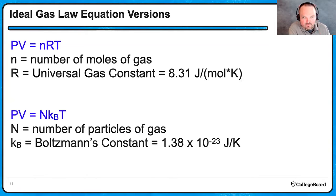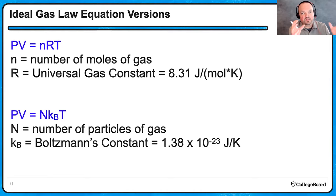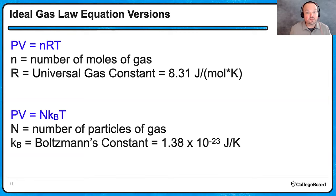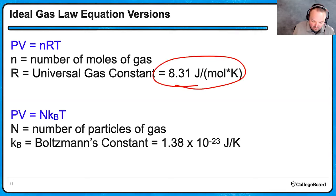The law I didn't graph is Avogadro's law, concerning the effect of changing the number of particles — we're almost always going to talk about a closed container where gas can't escape. There are two versions of the ideal gas law: PV = nRT using number of moles (little n), and PV = Nk_B T using number of particles (big N). To go from R to Boltzmann's constant, you just divide by Avogadro's number.